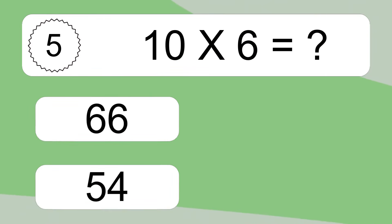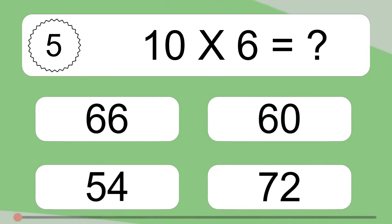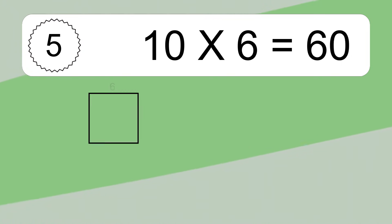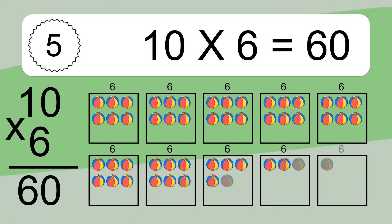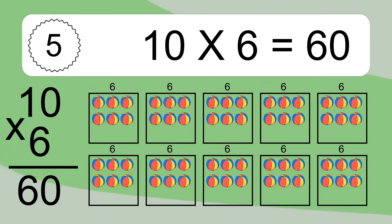10 times 6 equals what? 10 times 6 equals 60. We have 10 boxes, and each box has 6 colorful balls inside. If you count all the balls in all the boxes together, you will have 10 times 6 balls. This equals 60 balls.